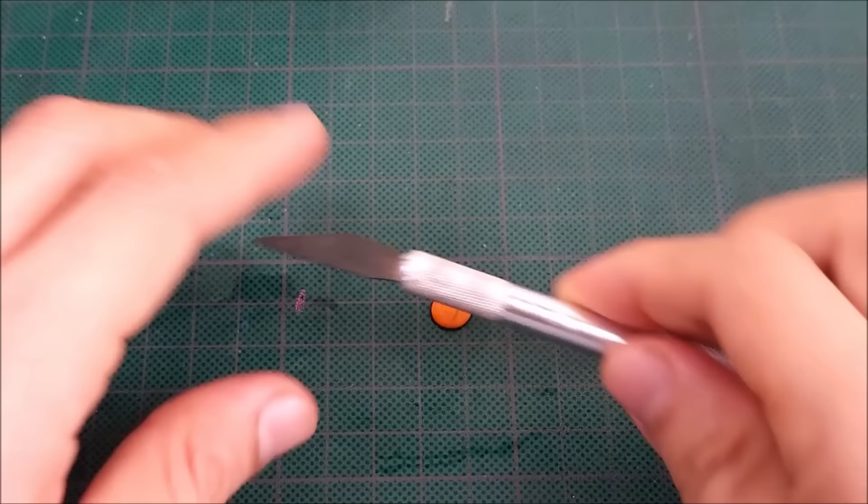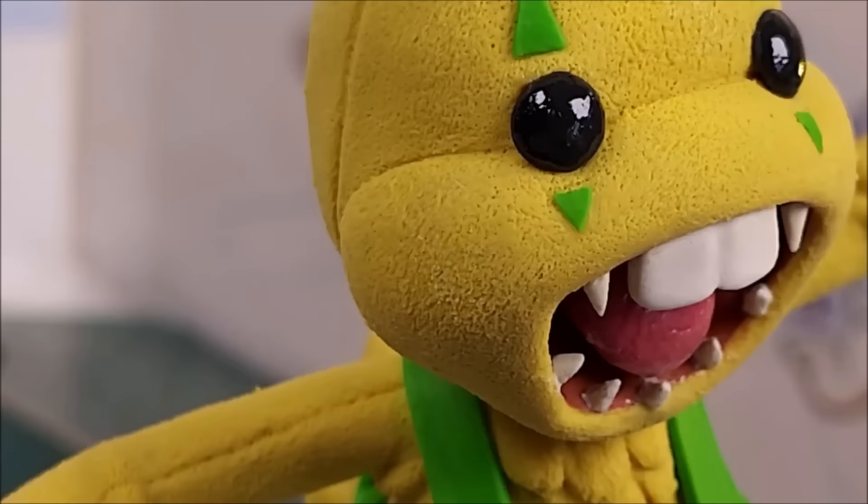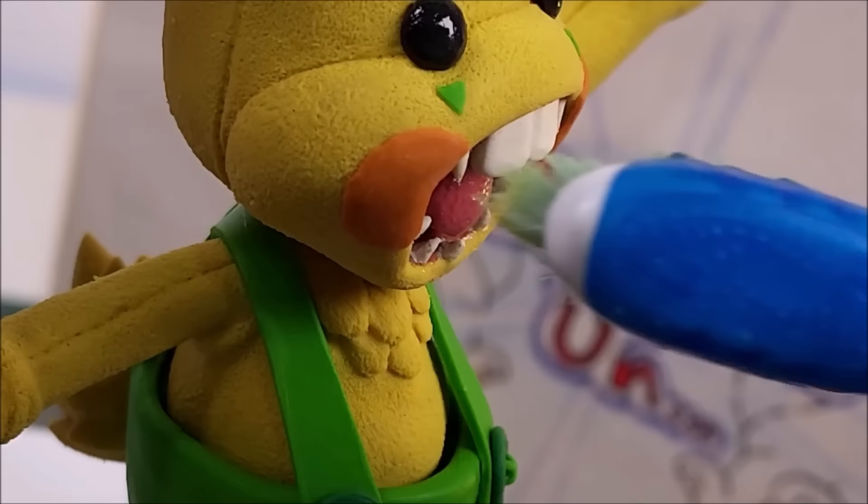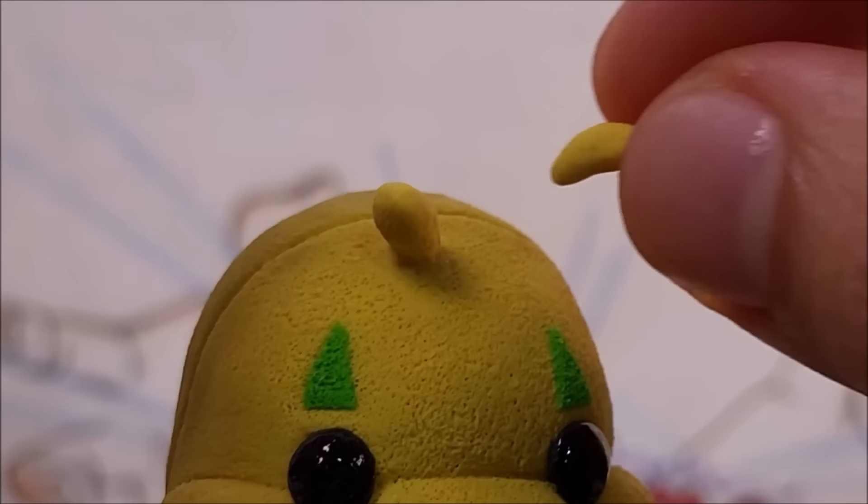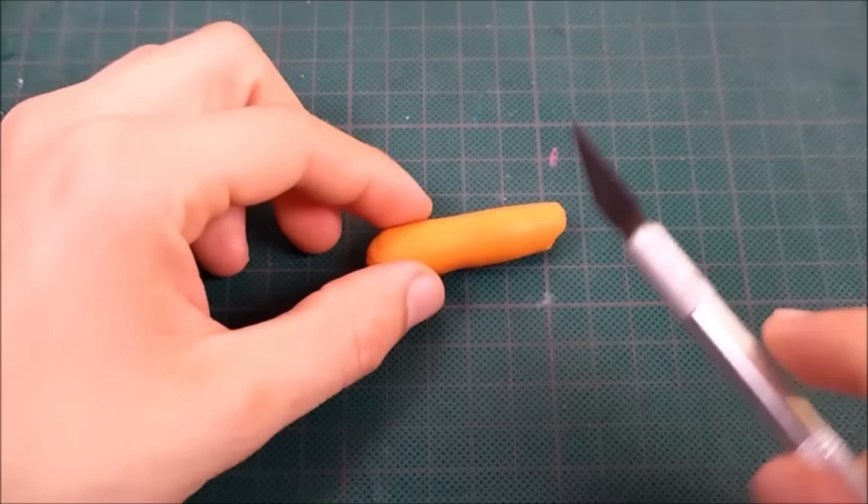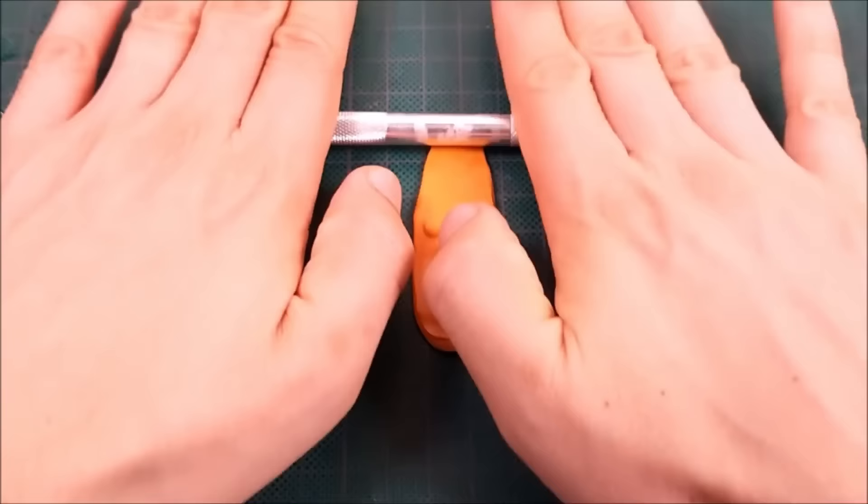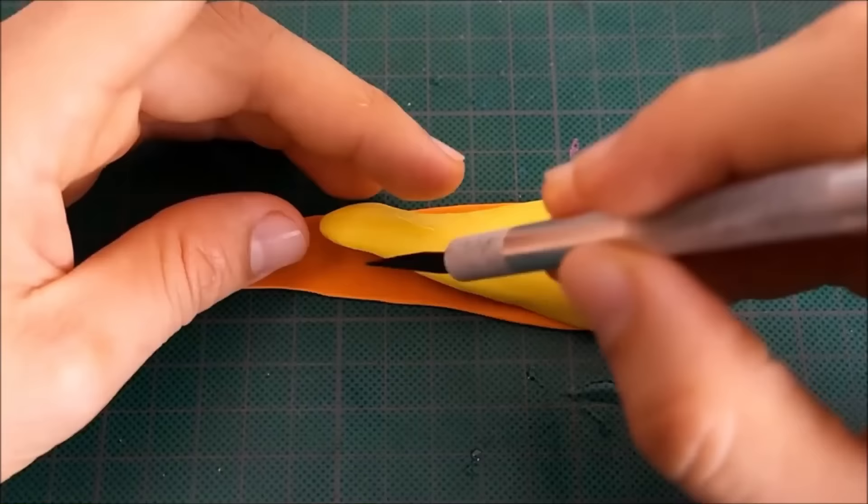Ahora aplastaré y haré muy delgada esta plastilina color naranja y con la tapa de un marcador le daremos una forma circular. Después con el cúter le haremos una boca como un pequeño Pac-Man. Esta pieza la colocaremos en las mejillas junto a la boca de Bunzo. A esta y todas las piezas anteriores les daremos el mismo tratamiento con el cepillo de dientes. Sobre la frente colocaré estos dos pequeños gusanitos amarillos y los empalmaré muy bien a la cabeza. Con más plastilina naranja haré estas dos zanahorias para nuestro conejo. ¿Entienden? ¿Zanahorias? ¿Conejo? Bueno, las aplanaré muy bien y después las cortaré y con ayuda de las orejas les daré una forma más similar a estas.